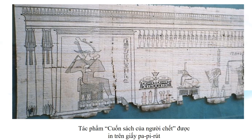Tại sao trong các lăng mộ lại tìm thấy nhiều loại giấy Papyrus như thế? Bởi vì theo suy nghĩ của người Ai Cập thì Papyrus chính là biểu tượng của sự sinh sôi, tái sinh và mầm mống của sự sáng tạo. Người Ai Cập cổ đại đã sử dụng Papyrus như là tấm bùa hộ mệnh trong các lăng tẩm hoặc khi ướp xác, và trên các bức vẽ trong các ngôi đền. Đây chính là một đoạn trích trong tác phẩm 'Cuốn sách của người chết' được in trên giấy Papyrus - một tài liệu tôn giáo cổ của người Ai Cập.